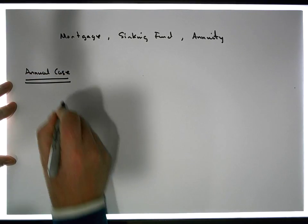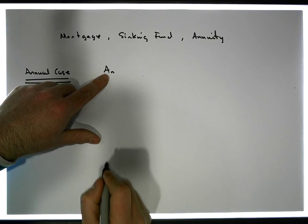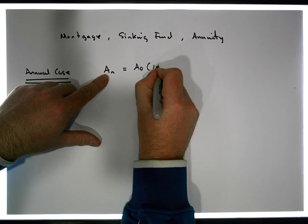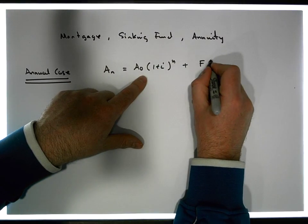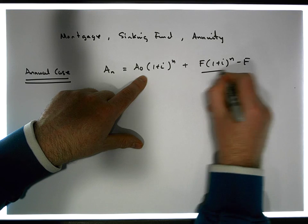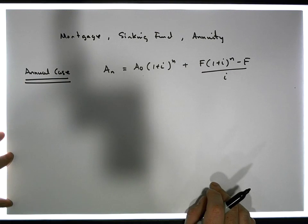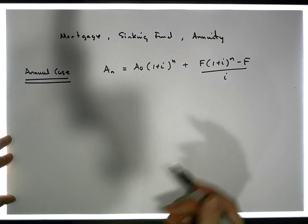The annual case says that the amount owed at any particular moment in time in an account is equal to A zero times one plus i to the n, that's the cost of borrowing, plus F times one plus i to the n minus F all over i. This is the accrual of your repayments. In the annual case, maybe we're not dealing with annual. That's if interest is applied annually.